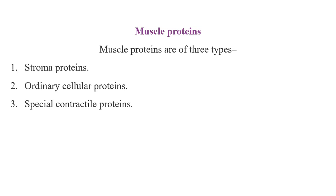Stroma proteins constitute about one-fifth of the total proteins found in muscle. They can be identified by the presence of collagen and elastic elements which bind the muscle fibers together, and they transmit tension to the tendons at the time of stretching or contraction.